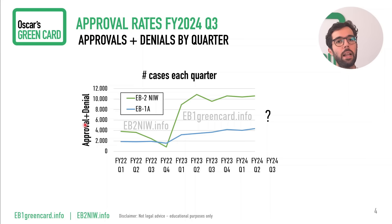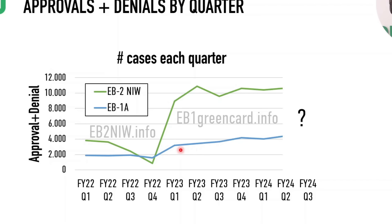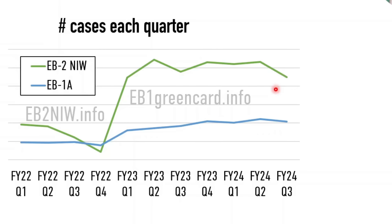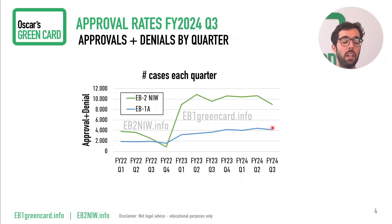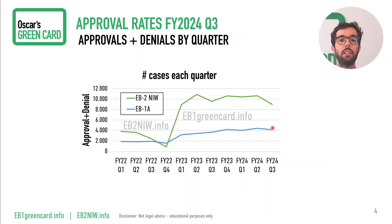Let's talk about demand. In this graph you can see the number of cases approved plus denied in each quarter. After the end of fiscal year 2022, the demand exploded for EB2NIW but also increased quite a bit for EB1A. We have been seeing more than 10,000 I-140 cases submitted each quarter for EB2NIW. What we see now in quarter three is that for the first time, the demand for EB2NIW is going down and is now below those 10,000 cases. For EB1A we see a slight decrease as well — not so pronounced — but we're seeing moderation in interest in these categories.